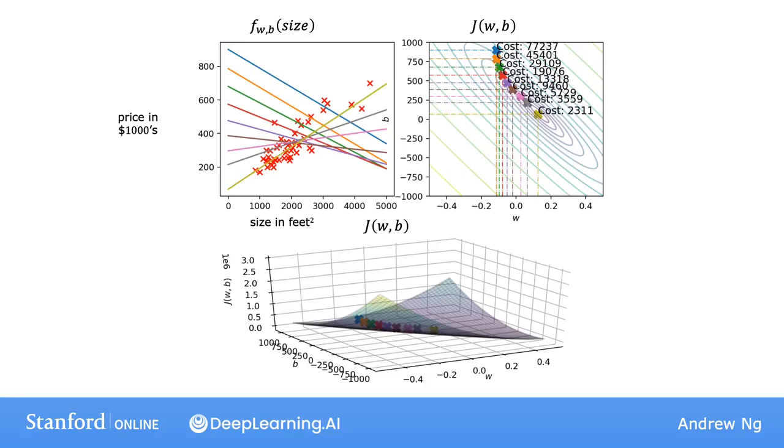And so that's gradient descent, and we're going to use this to fit a model to the housing data. And you can now use this f of x model to predict the price of your client's house or anyone else's house.